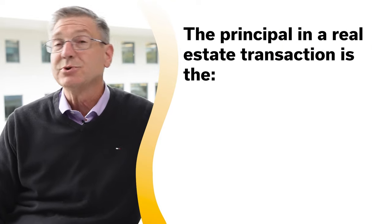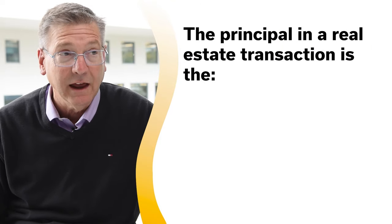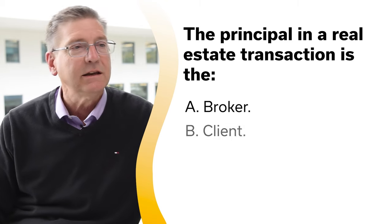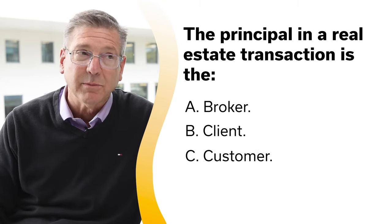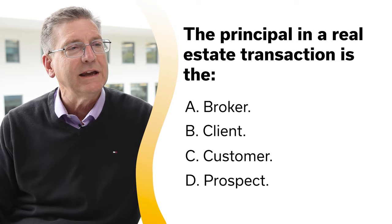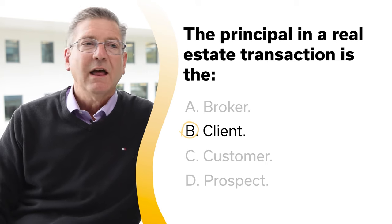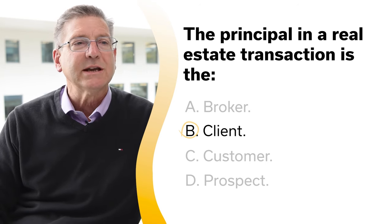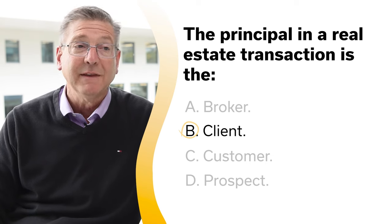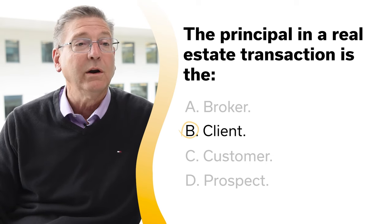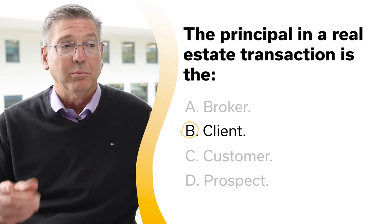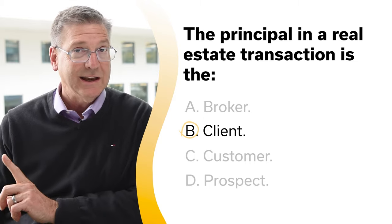The principal in a real estate transaction is: A, broker; B, client; C, customer; or D, prospect. The correct answer is B, the client. The principal in a real estate transaction is the party who hires the agent. It can be the seller, buyer, landlord, or tenant who becomes the client once they are hired. So remember, principal equals client.